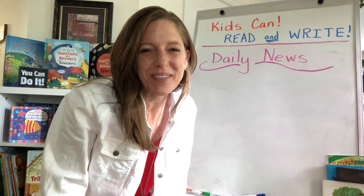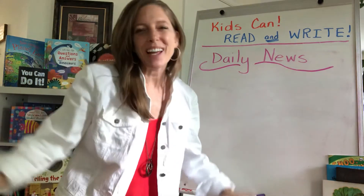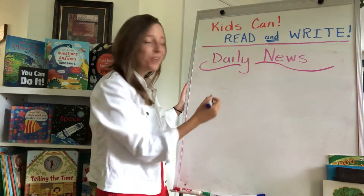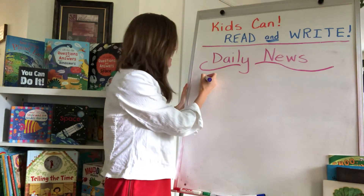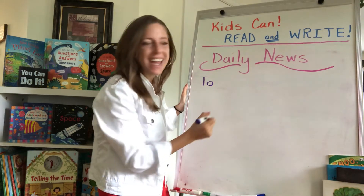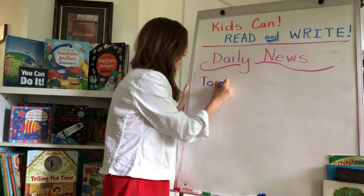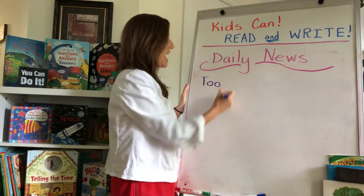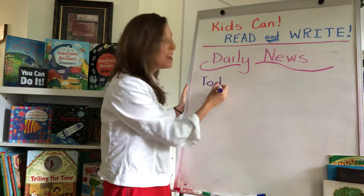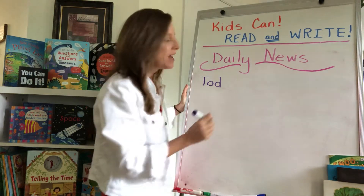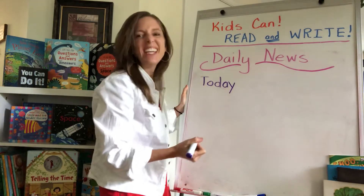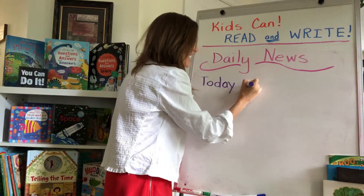Hey guys, Katie Huller here with KidsCanReadAndWrite.com. Are you ready for the news today? Let's get started. All right, today, how do we spell 'to'? It's at the beginning of a sentence, don't forget. Capital T-O. Now 'da A' — make sure when you're doing your D's that daddy's face comes first and then you put the ladder for him to climb up and work on the roof.